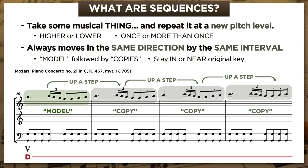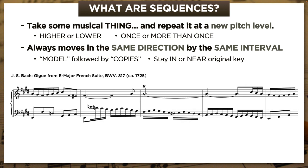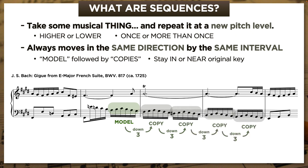The second example is from Bach's E Major French Suite, and it contrasts nicely with the Mozart in several ways. It has one extra copy—four versus three. It's obviously in the bass voice rather than the melody. It goes down by third rather than up by step. And it modulates.